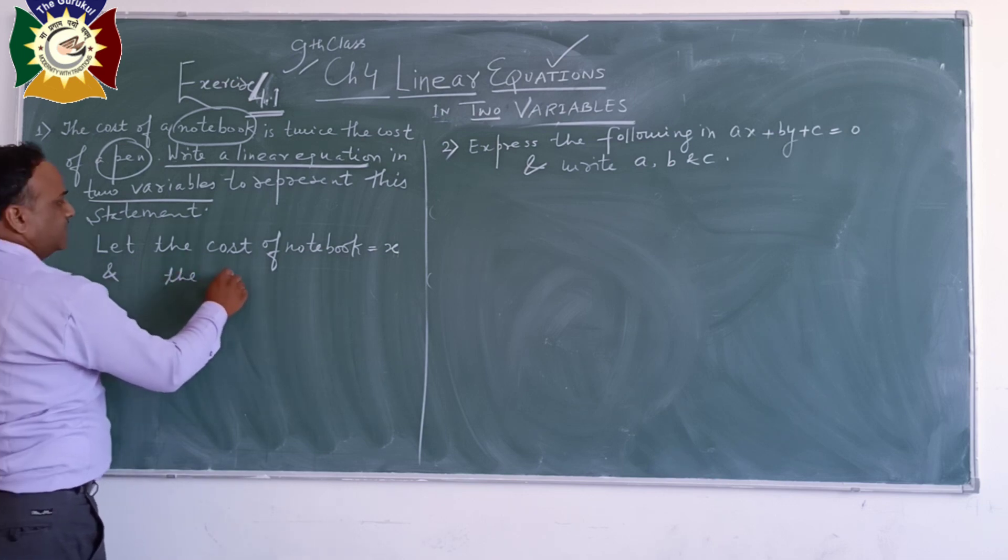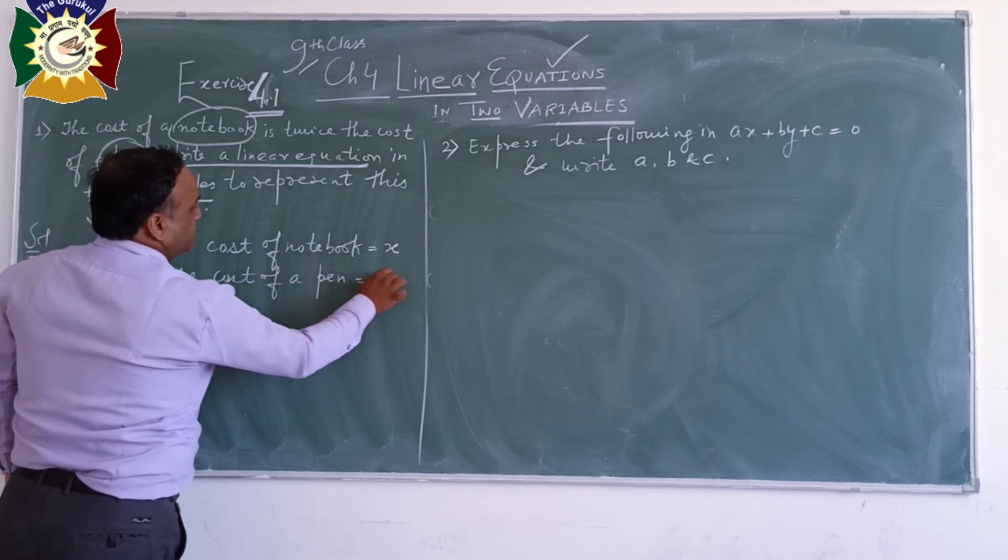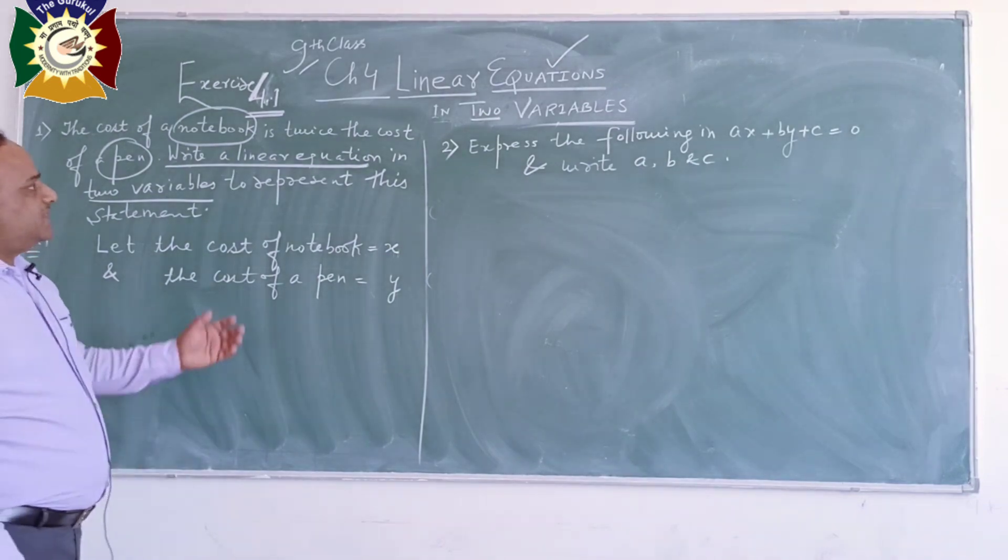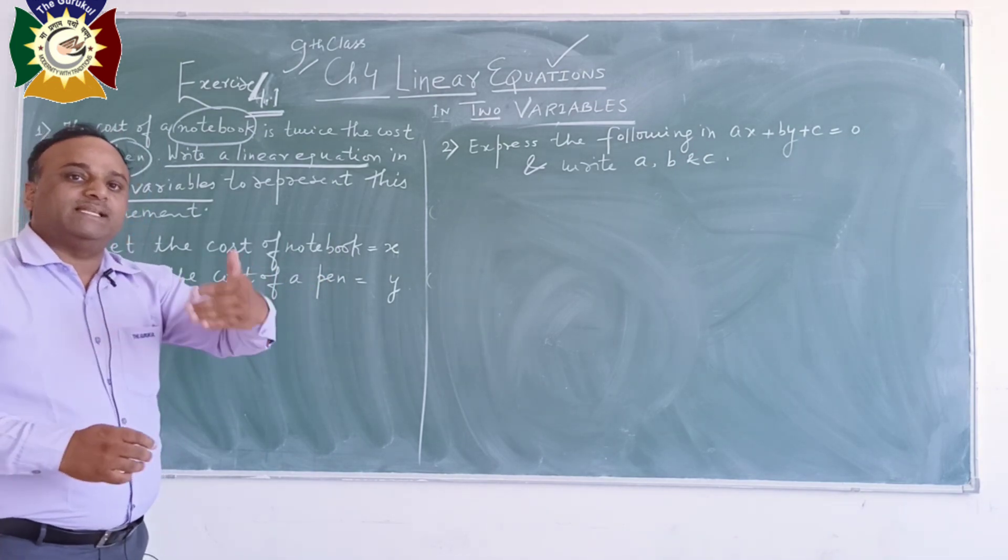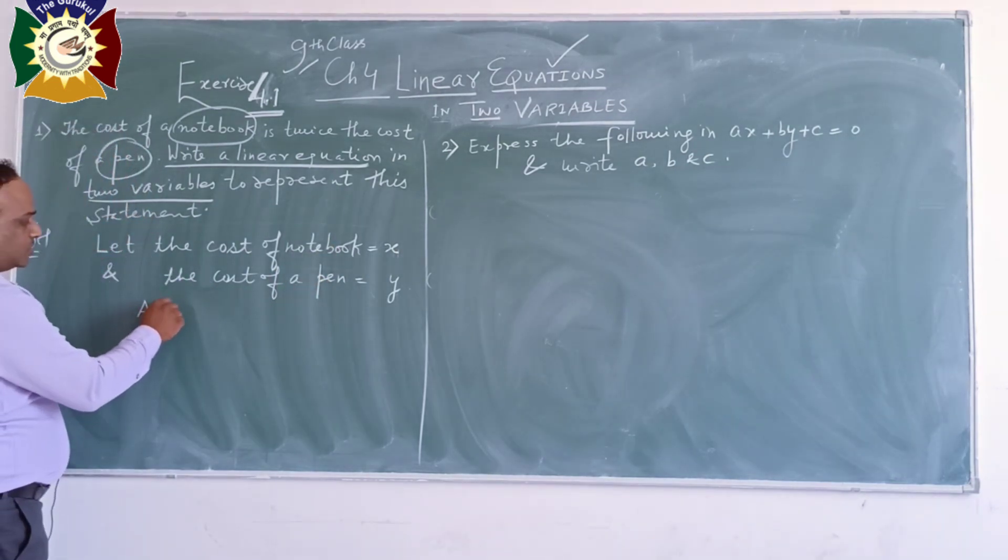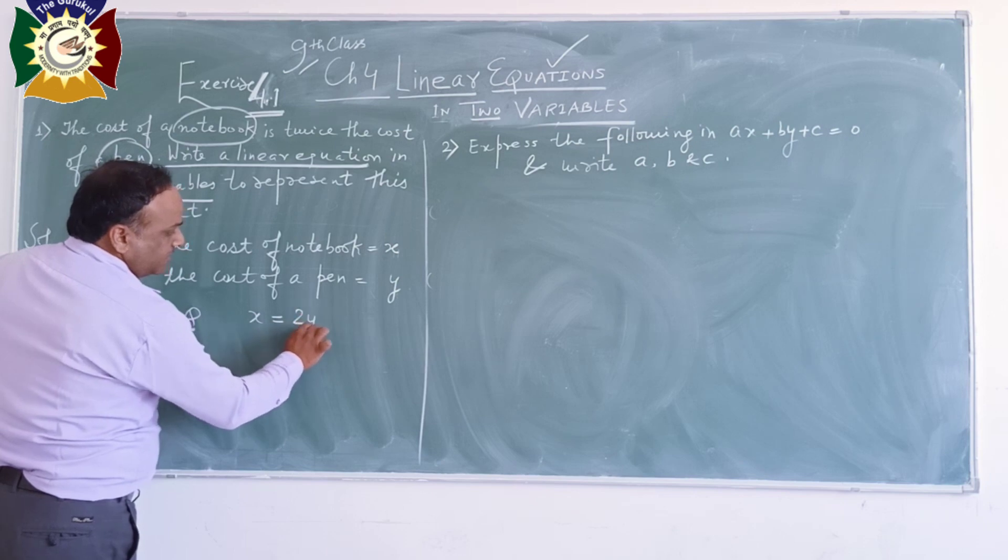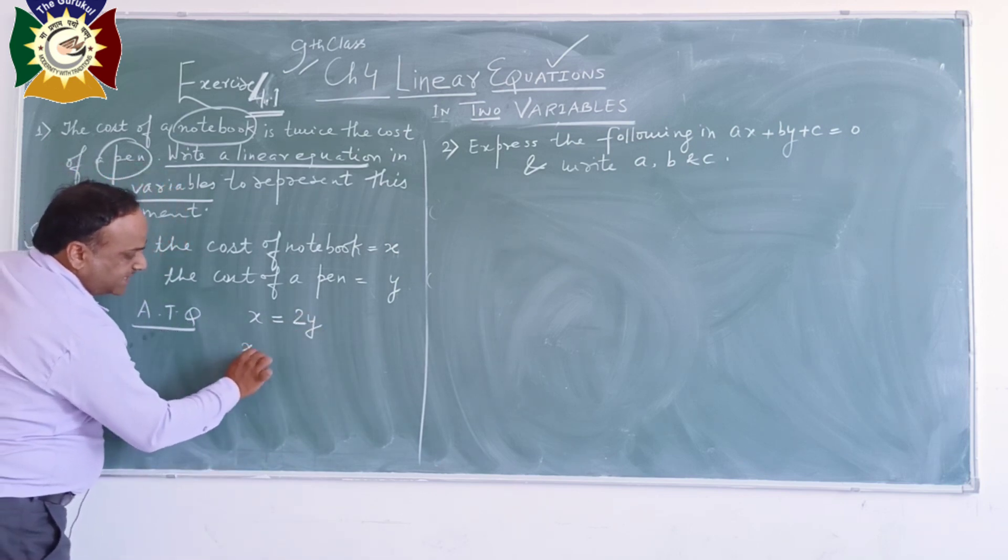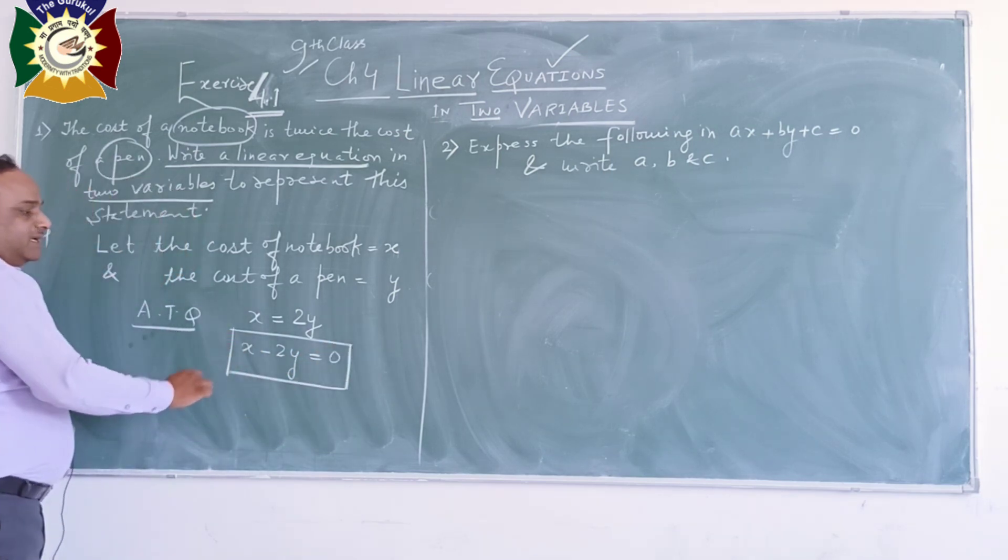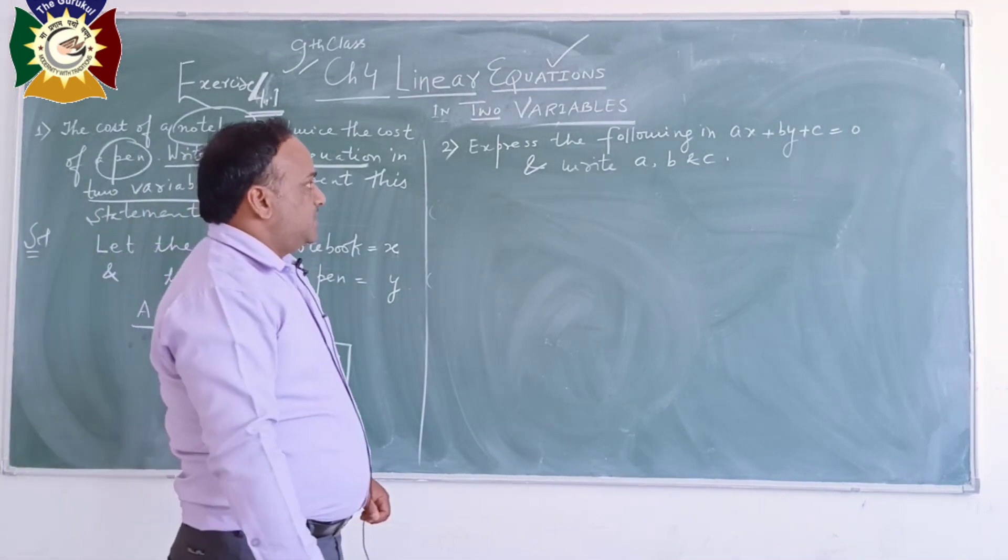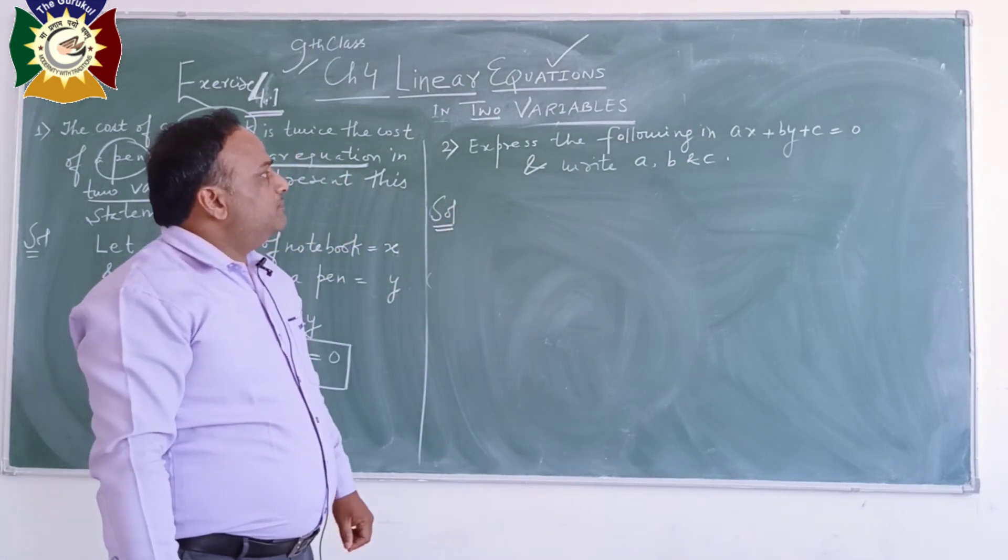Let the cost of a notebook be x, and the cost of a pen is equal to y. What is given here? The cost of a notebook is twice the cost of a pen. So according to the question, x is equal to twice means double of y. So x minus 2y is equal to zero. This is the linear equation in two variables for this statement.